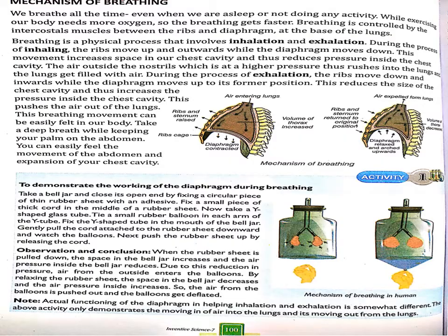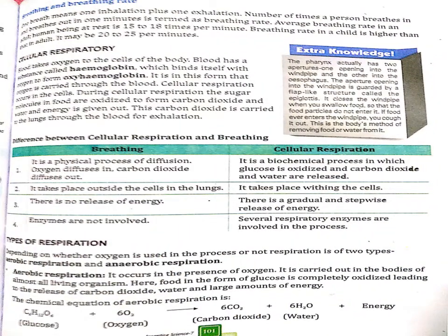Now moving to the next topic — breathing rate. One inhalation and one exhalation together count as one breath. An adult human being at rest breathes 15 to 18 times per minute. The breathing rate is higher in children compared to adults — it may be 20 to 25 per minute.